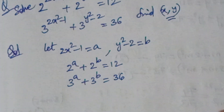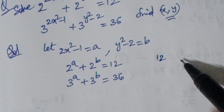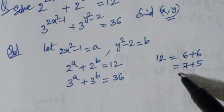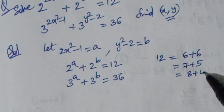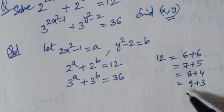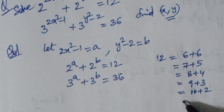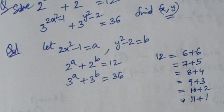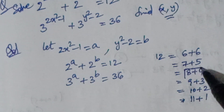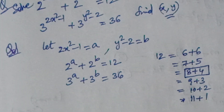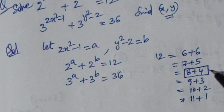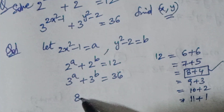Looking at the first equation, we need combinations that sum to 12 using powers of 2. The possible splits are: 6+6, 7+5, 8+4, 9+3, 10+2, 11+1. Among these, the only combination where both terms are powers of 2 is 8 + 4, since 8 = 2³ and 4 = 2², giving us a = 3 and b = 2.